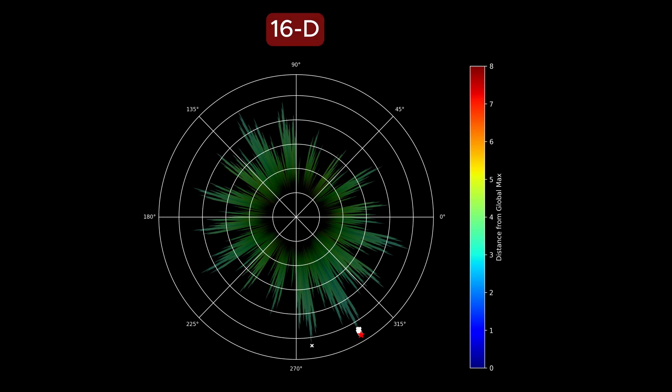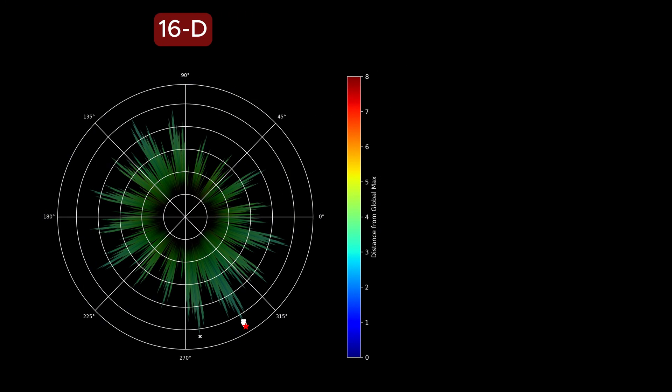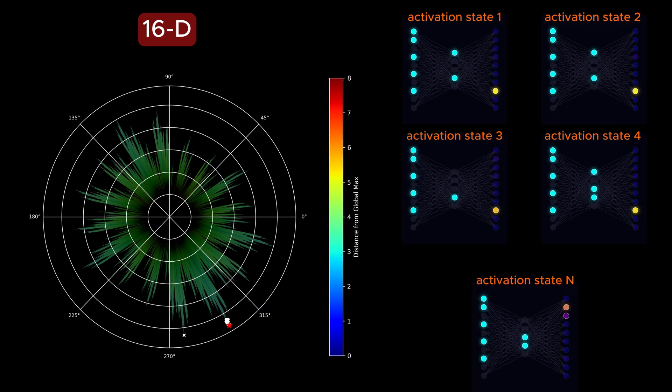This is a 16-dimensional free-energy landscape of a fully-connected neural network trained for classifying handwritten images. What you are seeing is not just an abstract mathematical object, but a concrete description of how an entire neural network organizes its internal states.